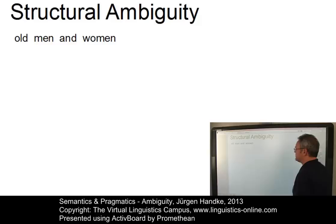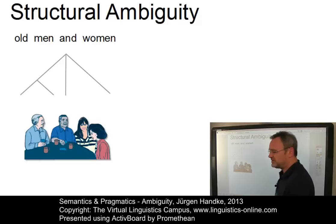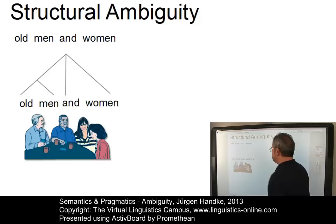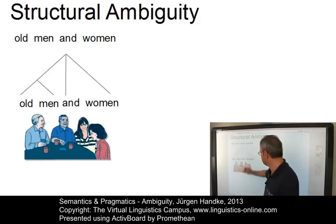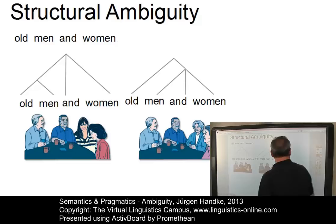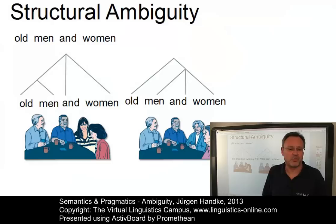More common examples of structural ambiguity occur at the level of phrases and sentences. Take 'old men and women' as an example — this complex noun phrase has two interpretations. On the one hand, you can have old men and women of any age, where 'old' is a specifier of 'men' but not of 'women,' so only the men are old. The second interpretation says that everyone is old, because now 'old' is a modifier of the entire coordinate noun phrase — both the men and the women are old.